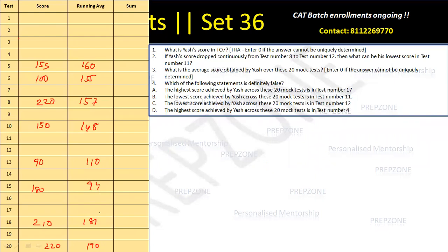Test 19 is 210 and 181, test 20 is 220 and 192. Now for the sum of the last 5 sets, I can just multiply these numbers by 5. This will be 800, this will be 775, this will be 785, this will be 740.